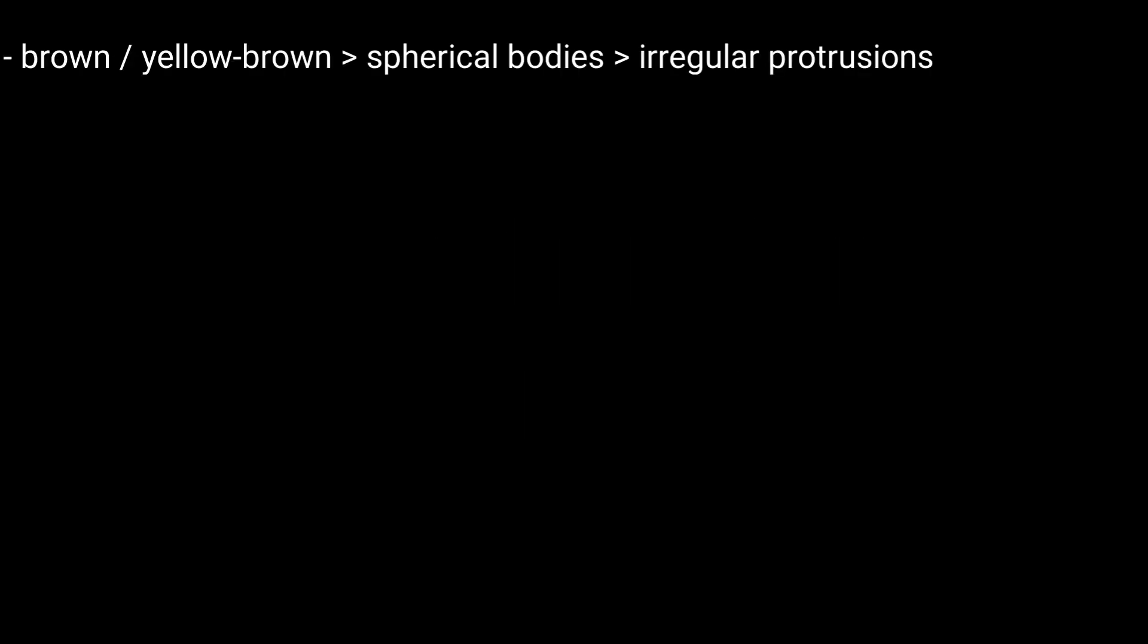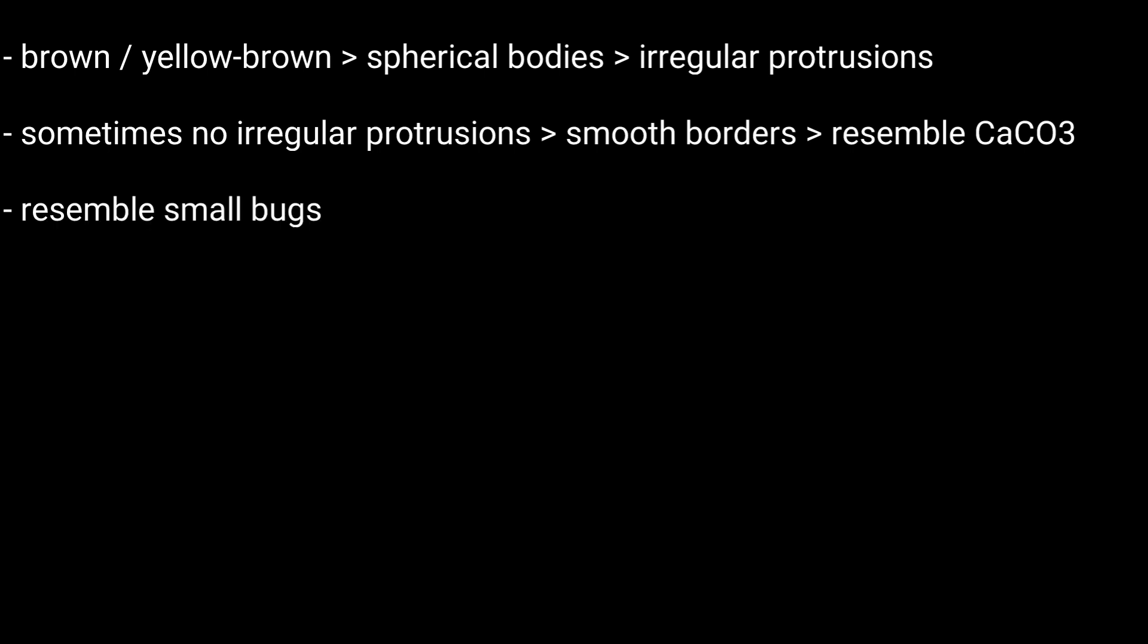Ammonium urate crystals generally appear as brown or yellow-brown spherical bodies with irregular protrusions or spiky horns. In some urine samples, they do not have irregular protrusions but have smooth borders and can resemble calcium carbonate. They almost resemble small bugs.